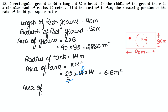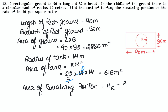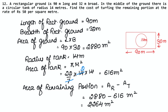Now we will find the area of the remaining portion. The remaining portion area equals area of the rectangle minus area of the tank. So 2,880 m² minus 616 m² equals 2,264 m². This is the area available for turfing.